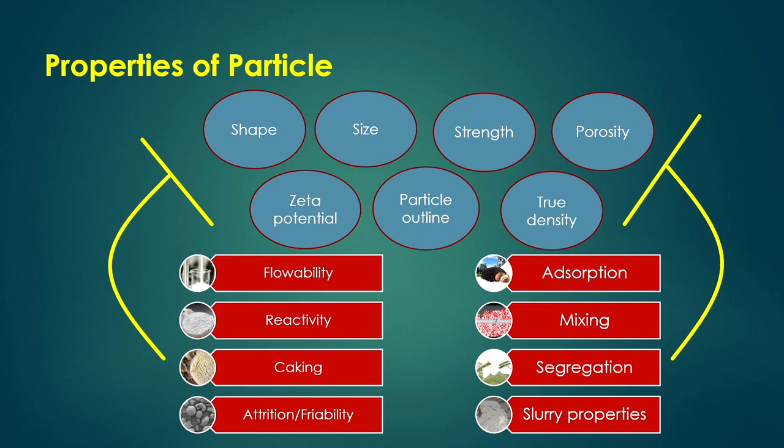Segregation — separating the particles — also depends on particle size and density. A mixture of higher-density and lower-density particles is easier to segregate, whereas uniform density particles are more difficult to segregate. Both size and density affect segregation.